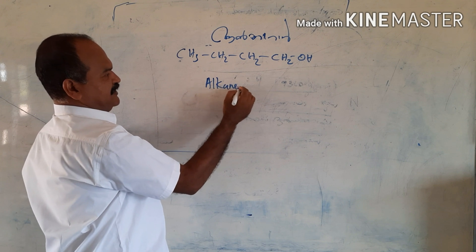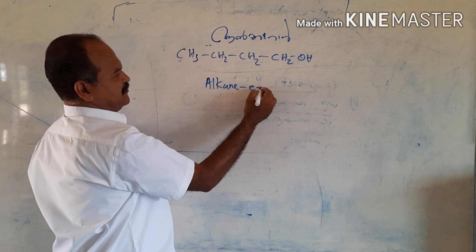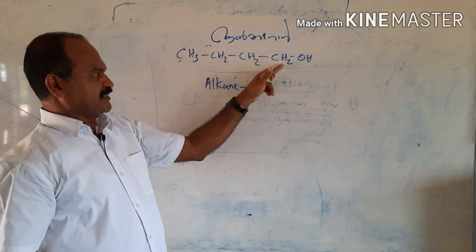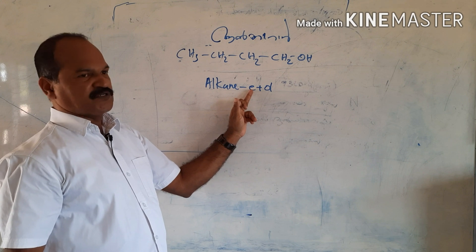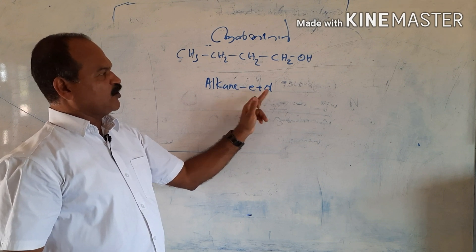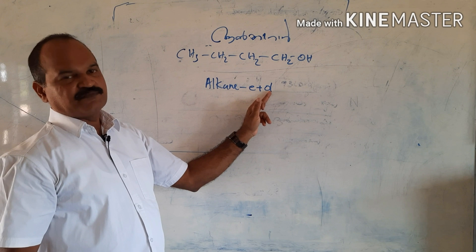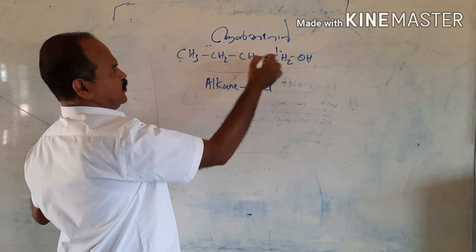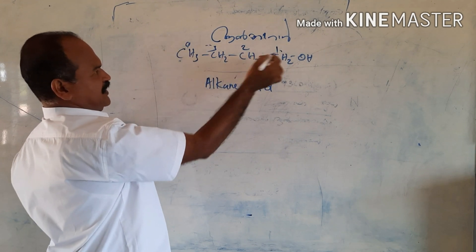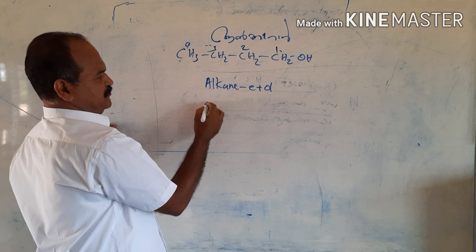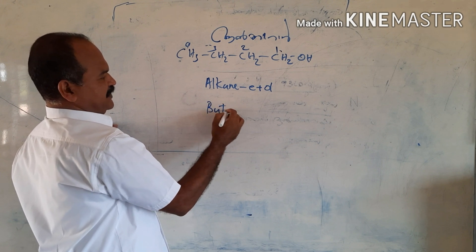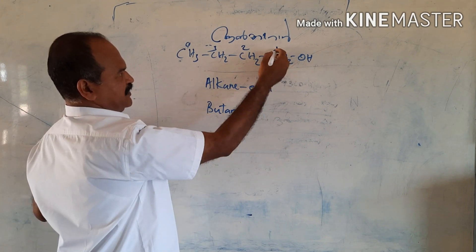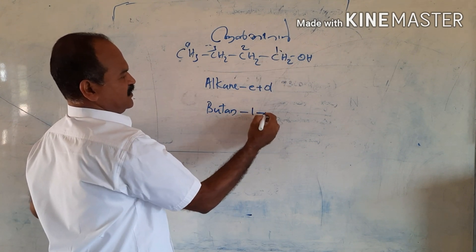The base naming rule is Alkane minus -e plus -ol. The first one is Butane. This is Butane. Butane becomes Butanol. The first one is Butanol and its position is the name of Butanol. The second one is Butanol.